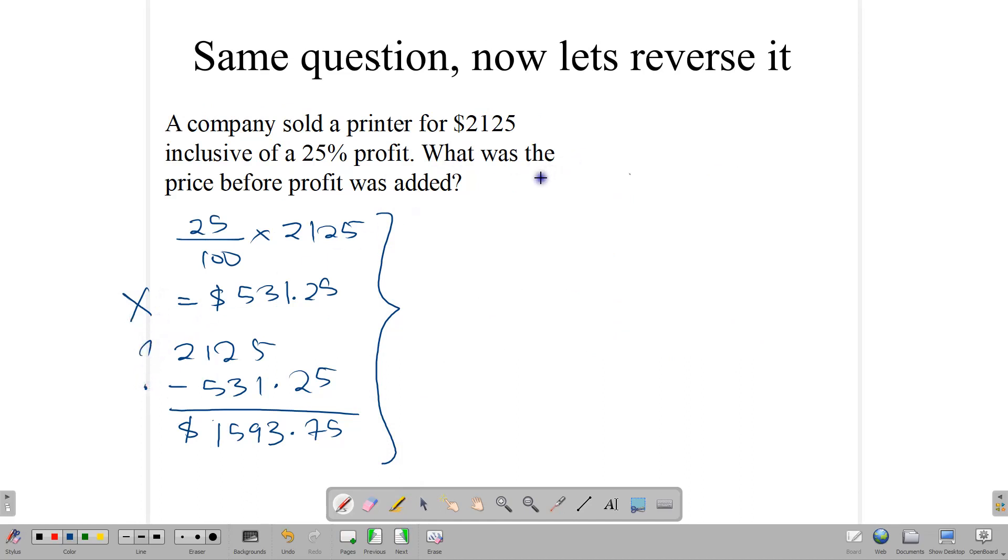So remember now, our cost price is always 100%. Our selling price is 100% plus or minus whatever you do to it. So in this case, if you're adding a profit, then it's plus 25%. If it was a discount, then you would minus whatever discount you were dealing with. So our selling price here is going to be 125%.